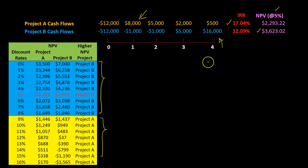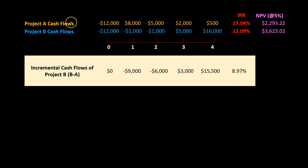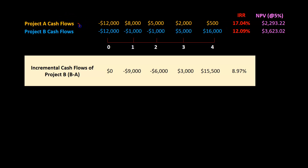One way to remedy this inconsistency is by calculating something called the incremental internal rate of return of project B. Suppose you settle with project A, maybe because it has the higher IRR. Now somebody asks: what if you switch from A to B? What are the incremental cash flows you will get from project B — in other words, what are the incremental cash flows as you make this move?